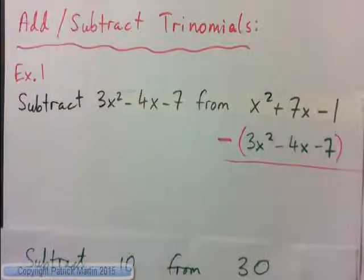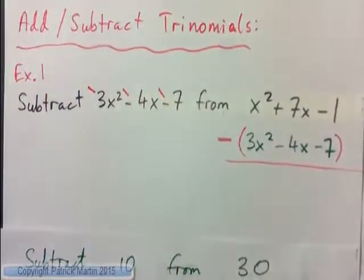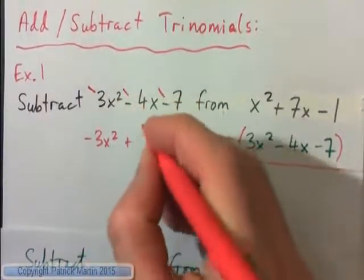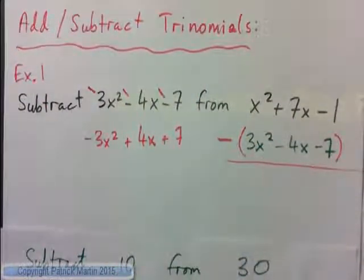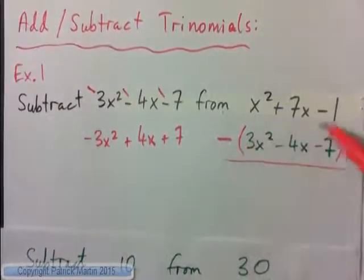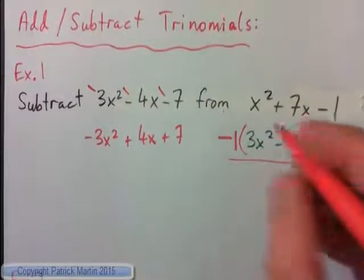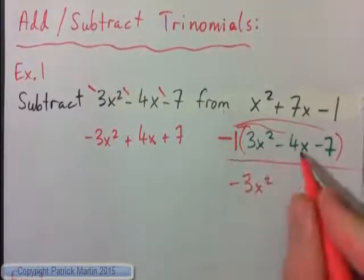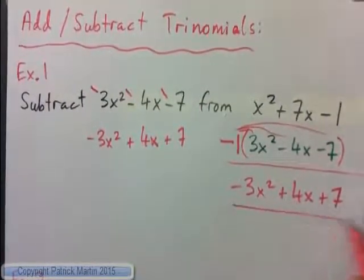We're also subtracting the negative 4x and we're subtracting a negative 7. So we're subtracting negatives — subtracting negative 4x, subtracting negative 7. So negative negative is going to make positive: you'll be adding 4x, and negative negative makes positive, you'll be adding 7. I would put parentheses around it, and when you subtract this bag of stuff, it's like multiplying it all by a negative 1. You've got to multiply everything by negative 1 to get negative 3x squared, then negative 1 times negative 4x gives plus 4x, and negative 1 times negative 7 gives plus 7.